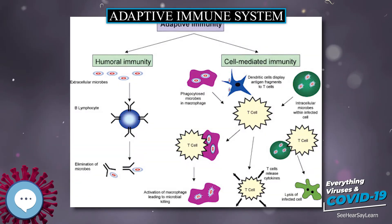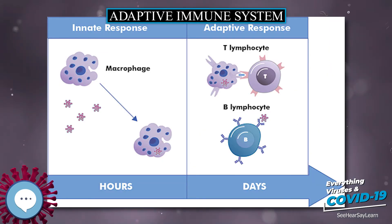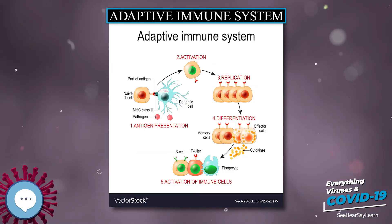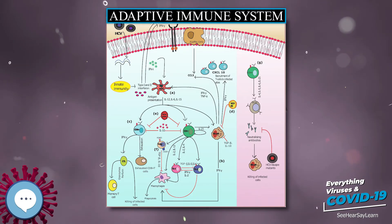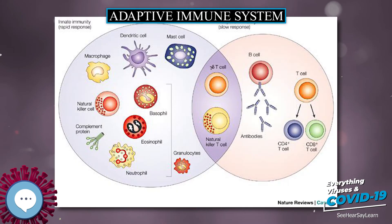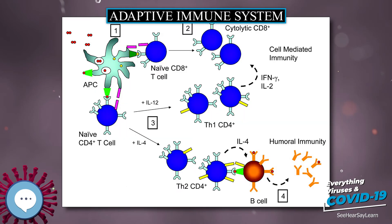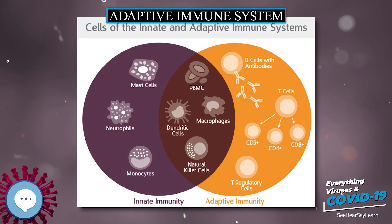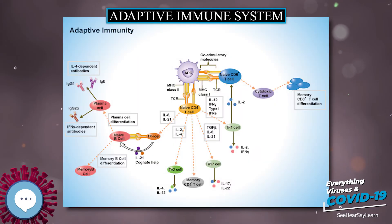Cytotoxic T cells, also known as TC, killer T cell, or cytotoxic T lymphocyte (CTL), are a subgroup of T cells that induce the death of cells that are infected with viruses and other pathogens, or are otherwise damaged or dysfunctional. Naïve cytotoxic T cells are activated when their T cell receptor strongly interacts with a peptide-bound MHC class I molecule. This affinity depends on the type and orientation of the antigen/MHC complex, and is what keeps the CTL and infected cell bound together. Once activated, the CTL undergoes clonal selection, in which it gains functions and divides rapidly to produce an army of armed effector cells.